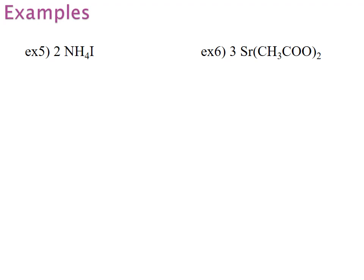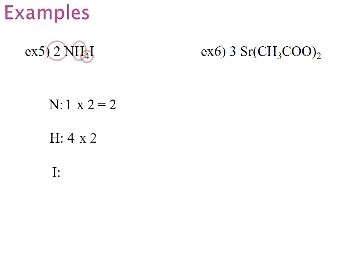Final set of examples. We'll start with ammonium iodide. First, again, we will write out the elements that are present. We have capital N, capital H, and capital I. Nitrogen: there is just 1 N, and I will have to multiply it by the number that precedes the formula, which is 2, giving me a total of 2 nitrogen atoms. Hydrogen: there are 4 hydrogens — I will have to multiply that by the 2 that precedes the formula, so I have a total of 8 hydrogen atoms. Iodine: I have just 1, and again I will multiply by the number that precedes the formula, giving me a total of 2 iodine atoms.